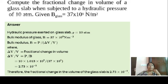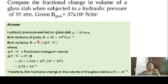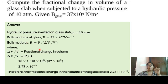Second problem: Compute the fractional change in volume of a glass slab when subjected to a hydraulic pressure of 10 atm. Given: bulk modulus of glass B equals 37 × 10⁹ N/m². The hydraulic pressure is 10 atmosphere. Bulk modulus equals ΔP divided by (ΔV/V), so fractional change in volume δV/V equals P divided by B.